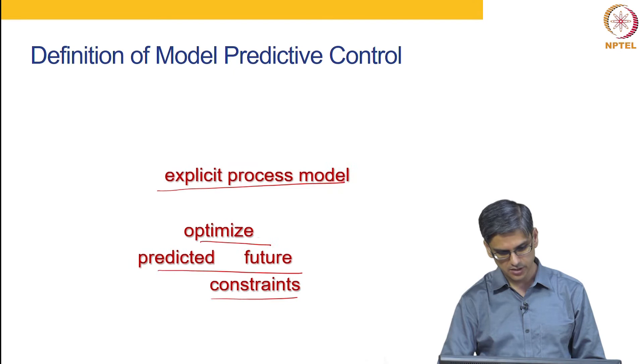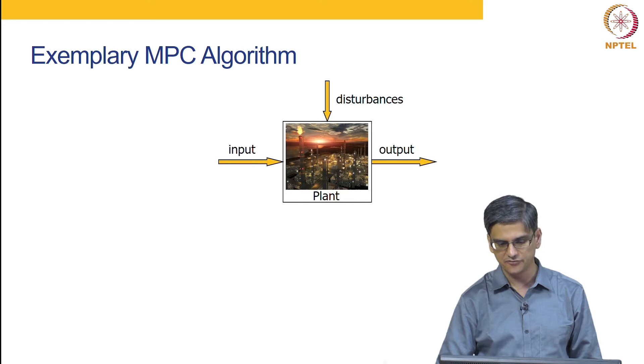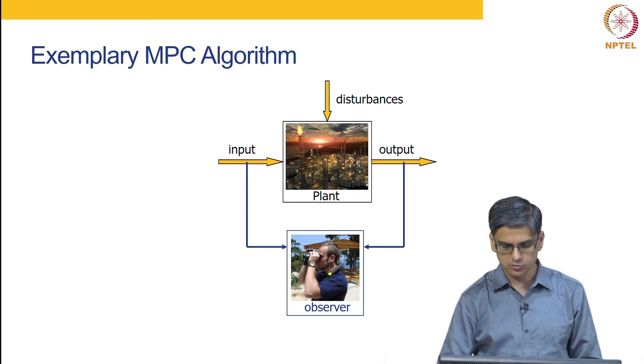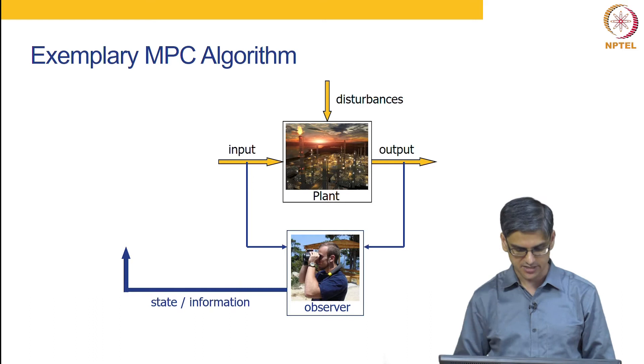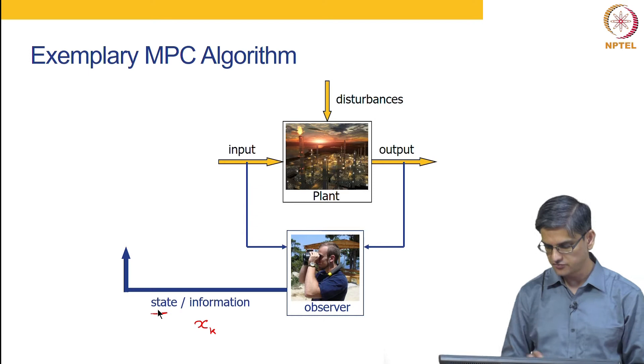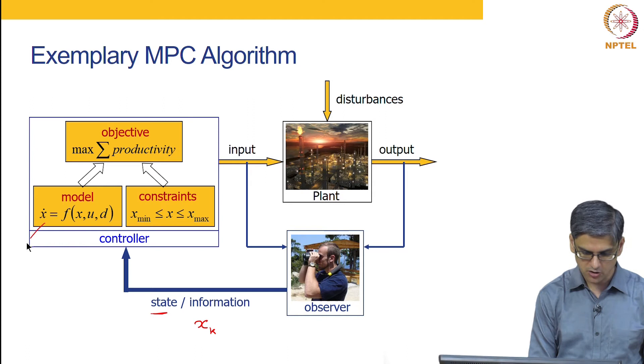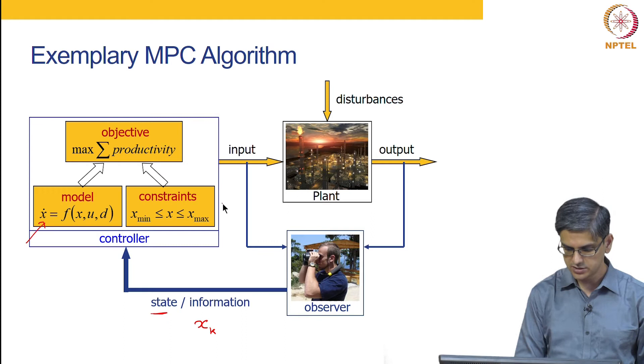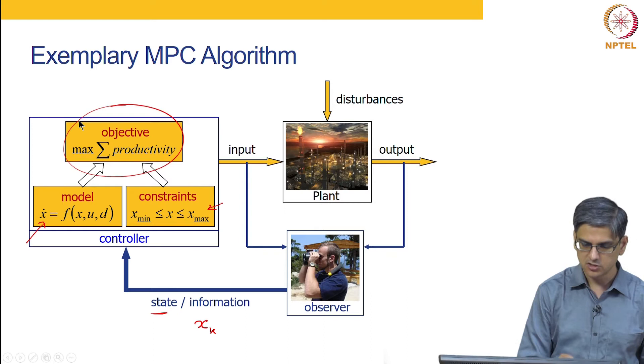So let us look at an exemplary MPC application. You have your plant which has input, output and disturbances. You use the input and output information with an observer in order to determine the state. The state is what I had referred to in response to his question, I had referred to that as xk. That is what we will call the state of the system. And we will use a model of this nature in order to compute how the future is going to behave.